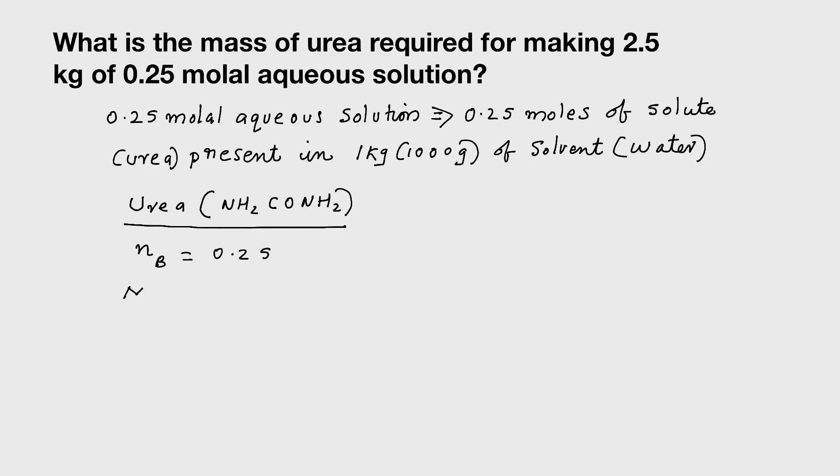And what is the molar mass? Here you can see 2 nitrogen, so 14 into 2. You can see 4 hydrogen, so 4 into 1, plus 1 carbon - 12 into 1, plus 1 oxygen - 16 into 1. On calculating, you will be getting 60 gram.